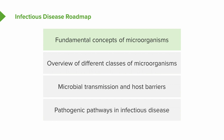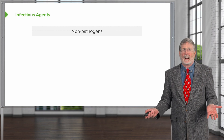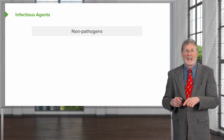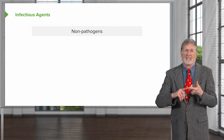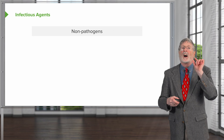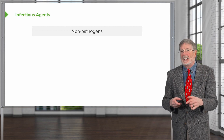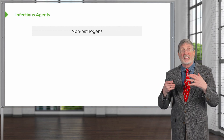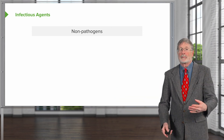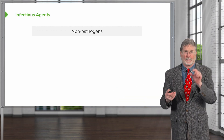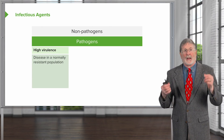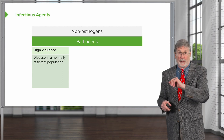I'm going to divide the world into non-pathogens and pathogens. The vast majority of what's out there — fungus, bacteria, virus, etc. — are non-pathogens. We go about our daily lives in close proximity to one another, even sometimes with them within us, no problem. Then clearly there are pathogens, and I'm going to divide those into three categories.